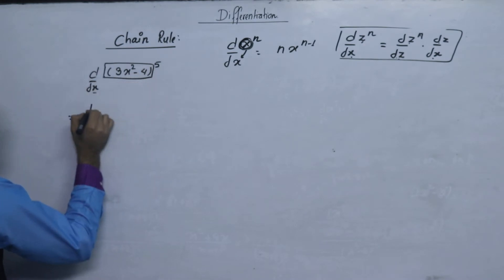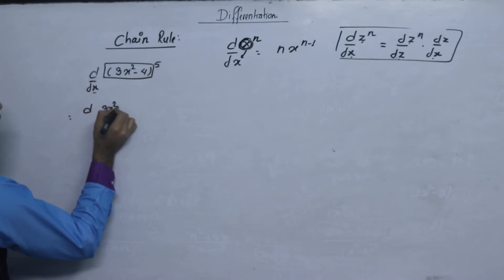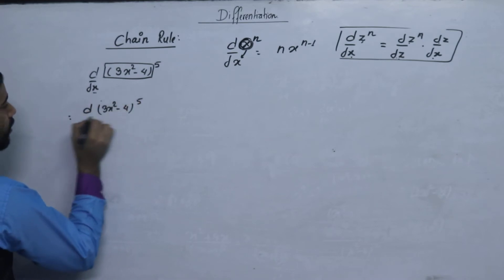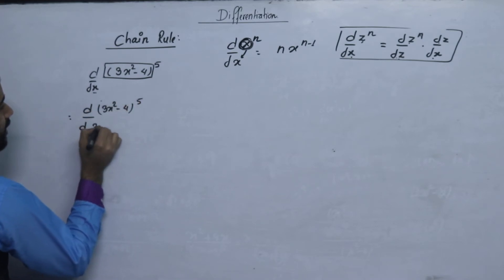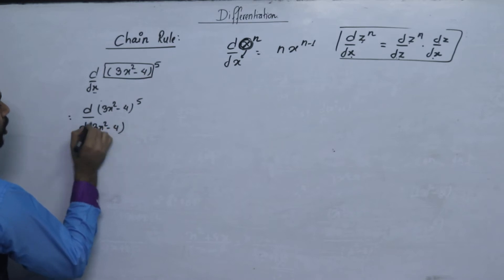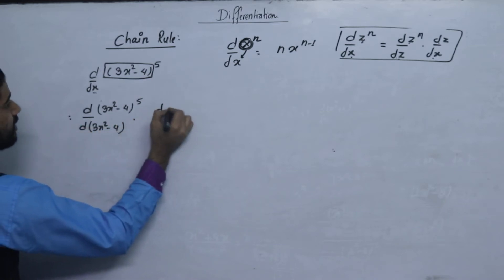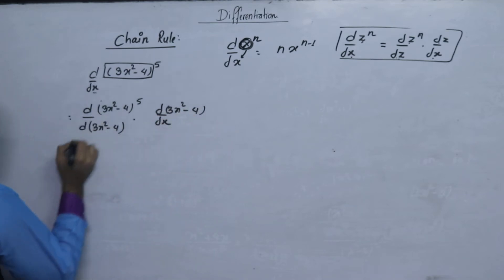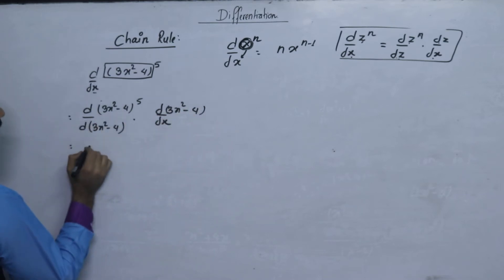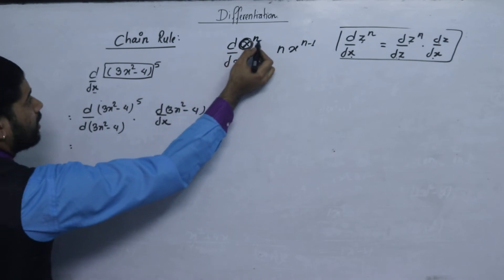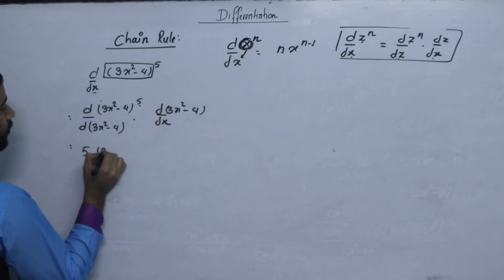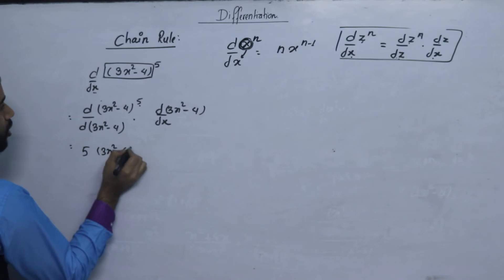The differentiation is of 3x squared minus 4, to the power 5. We apply the chain rule: differentiate 3x squared minus 4 to the power 5, bringing the power down. Then we get 3x to the power 4, with a factor of 5.